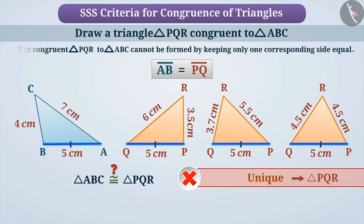Therefore, it is not possible to form the congruent triangle PQR to triangle ABC by keeping only one corresponding side equal.